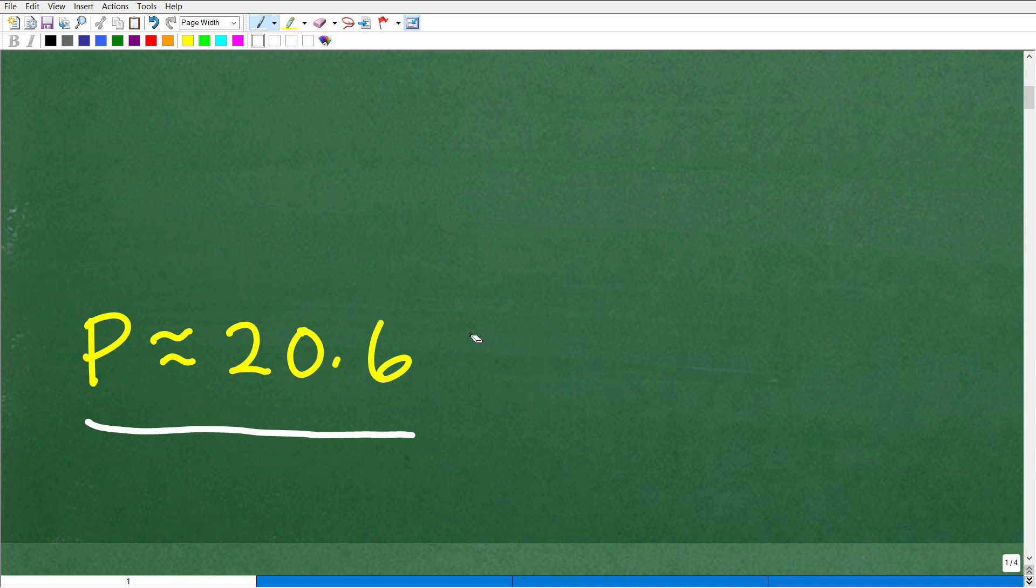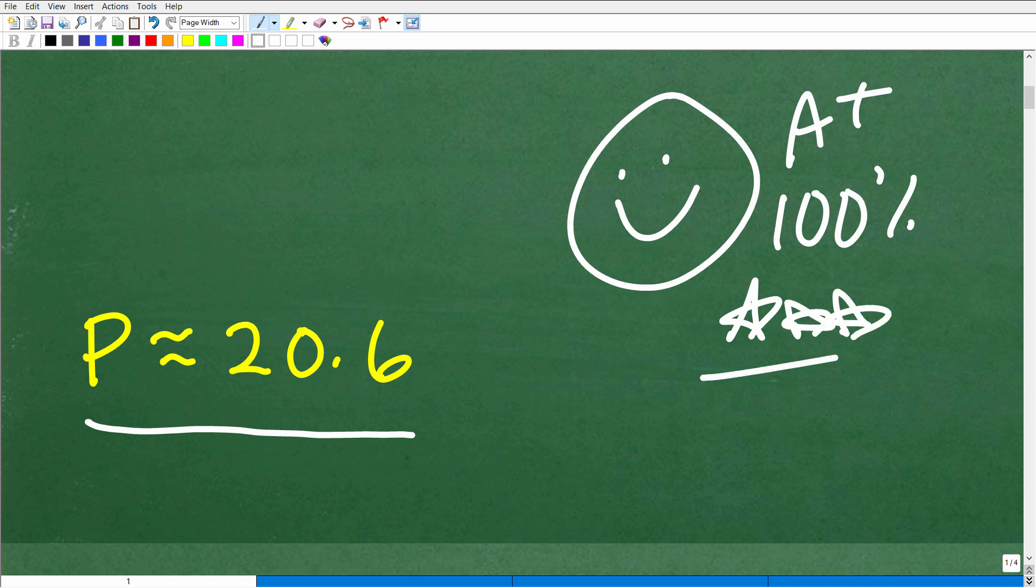So how'd you do? Well, if you got this right, let's give you a nice little happy face, an A+, 100%, and multiple stars, so you can tell your friends and family that you solved a pretty interesting perimeter problem. I'm pretty sure they'll be very impressed. They'll be like, wow, that's pretty awesome.